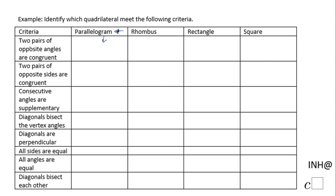The first property for a parallelogram: two pairs of opposite angles are congruent — that is true. The second property: two pairs of opposite sides are congruent — that is also true. For any parallelogram, consecutive angles are supplementary — that is also true.